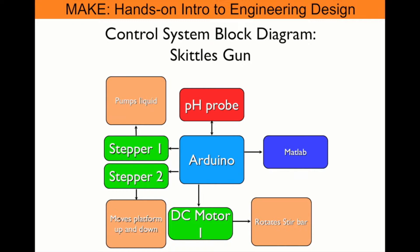Once the Arduino confirms that this platform is down and in position, it will look for a string from the pH probe. If it receives a string from the pH probe, it'll tell the stepper to run a predetermined number of steps.